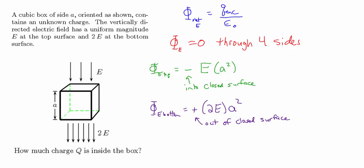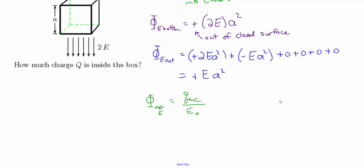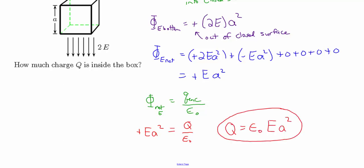The net flux is +2EA² plus −EA² plus zero for each of the four sides, giving a net flux of +EA². To find the charge inside the box, we use Gauss's law: EA² equals the enclosed charge Q divided by epsilon zero, so Q equals epsilon zero times E times A squared. The charge is positive because the net flux through the box is positive.